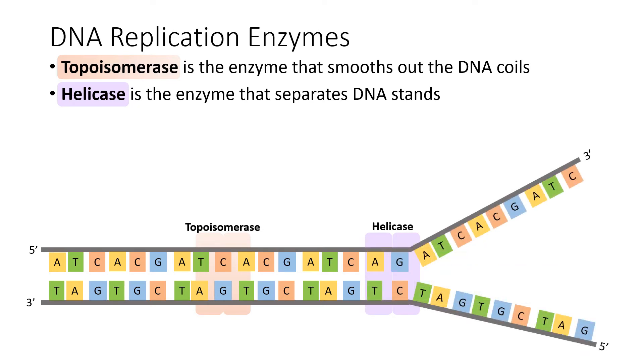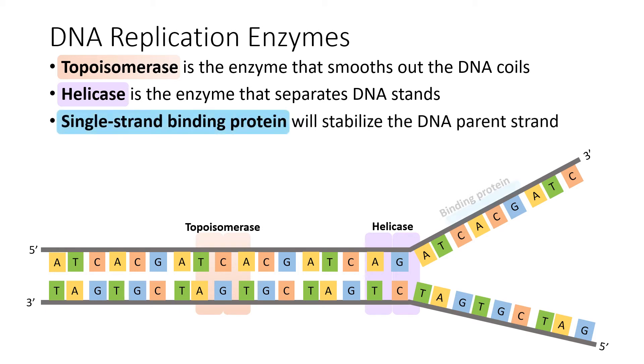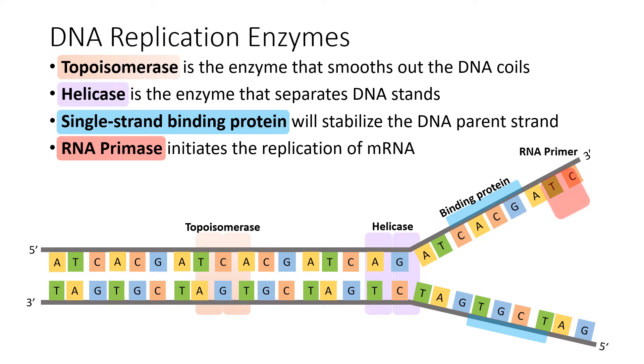Now that our strands have separated, they become a little flimsy, and we're going to need to shore them up a bit. And we do this with a binding protein. Now we're ready to make our daughter strands. So to begin, we're going to prime with an RNA primer, and then we can start dropping in nucleotides.